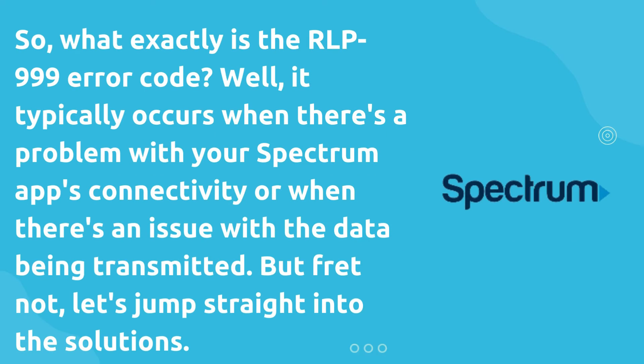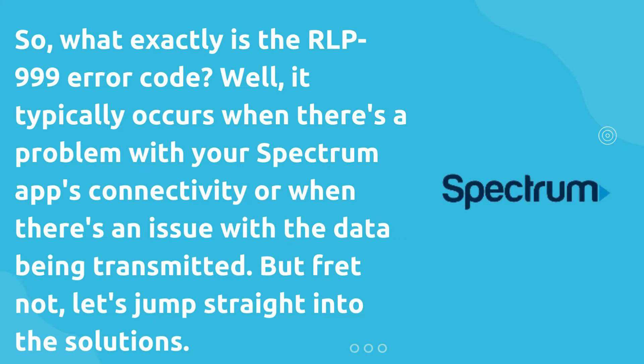What exactly is the RLP 999 error code? It typically occurs when there's a problem with your Spectrum app's connectivity, or when there's an issue with the data being transmitted. Let's jump straight into the solutions.